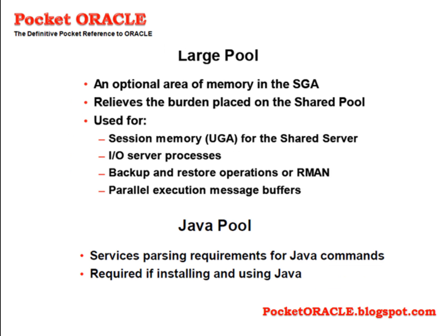The large pool is an optional area that, if created, will be used automatically by various processes that would otherwise take memory from the shared pool. It's used for session memory, the UGA for the shared server, I/O server processes, backup and restore operations or RMAN, and parallel execution message buffers. The Java pool is required only if your application is going to run Java stored procedures within the database; it is used for the heap space needed to instantiate the Java objects.